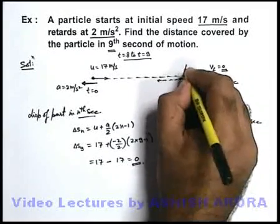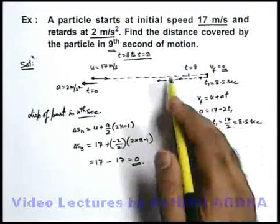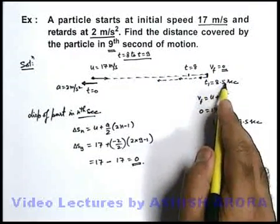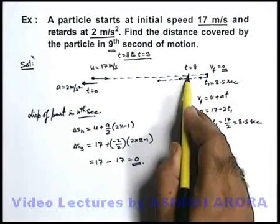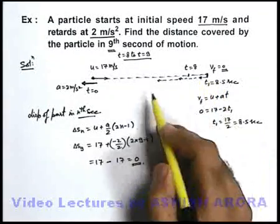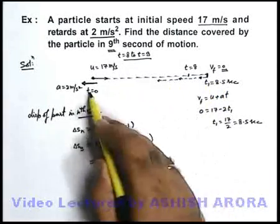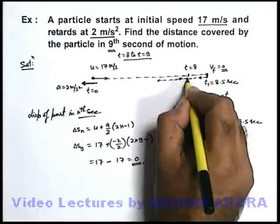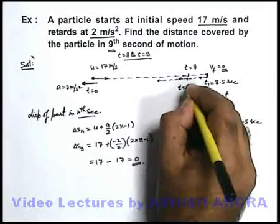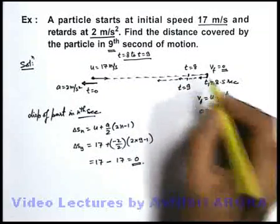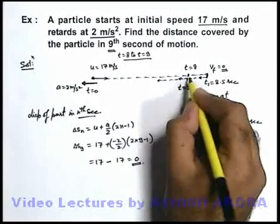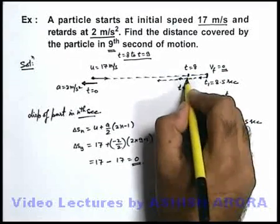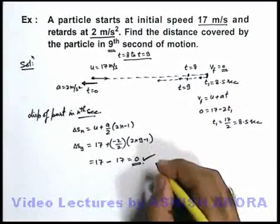If it is at this position at t equal to 8 seconds, it'll be 0.5 seconds in going from this point to this point. Similarly, as we analyze the accelerated motion with same acceleration, it'll take same time, that is 0.5 seconds, going from this point to this point back. So here it'll reach at t equal to 9 seconds. You can see at t equal to 8 and 9 seconds, the particle was at same position. That's why the result is coming out to be zero.